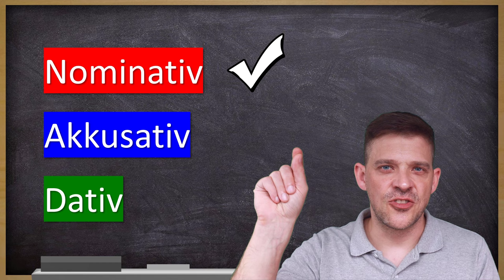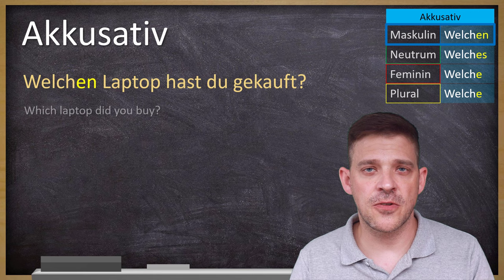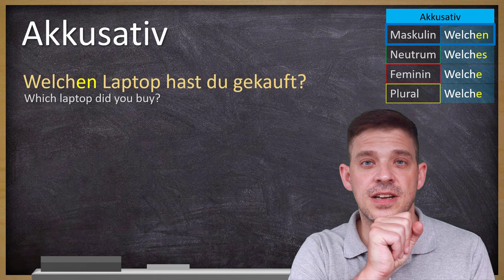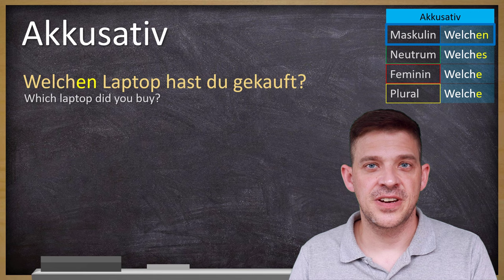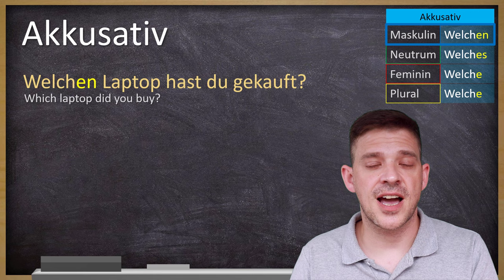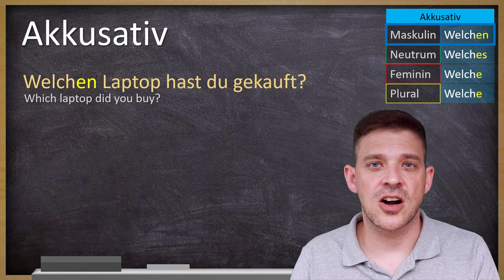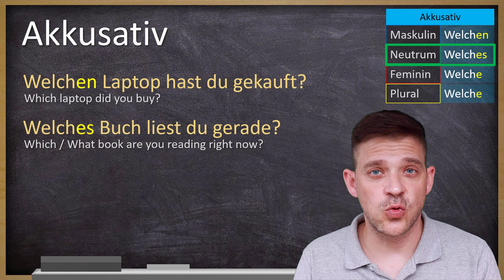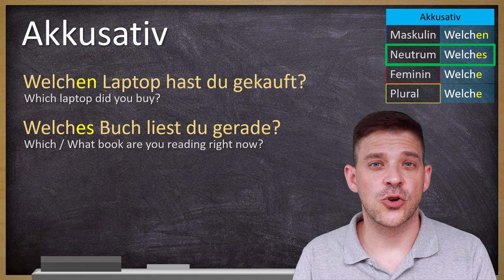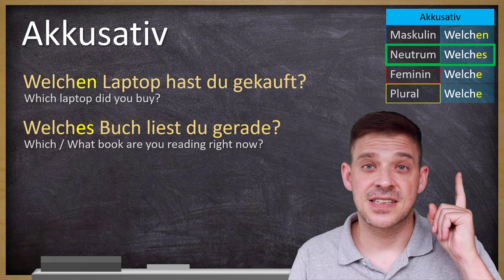Now let's go to Akkusativ. We start with an example in Maskulin: Welchen Laptop hast du gekauft? — Which laptop did you buy? Laptop is masculine. Why is it Akkusativ? Kaufen takes Akkusativ — du is already the subject in Nominativ, so laptop is the object in Akkusativ, giving us Welchen. Neutrum: Welches Buch liest du gerade? — Which book are you reading at the moment? Buch is Neutrum, also in Akkusativ — Welches. Note: in Akkusativ only masculine changes.